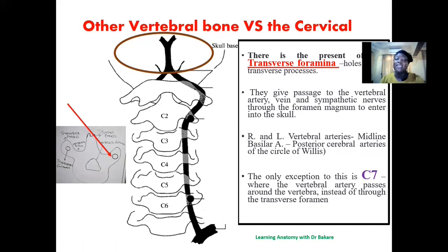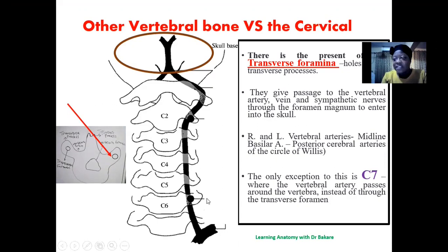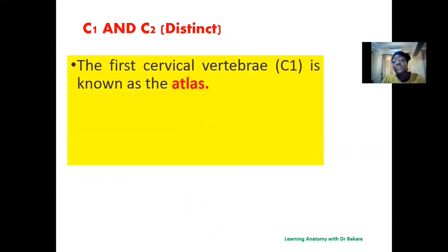This is why the transverse foramen is created only in the cervical vertebra. In the lower vertebrae — the thoracic and lumbar — the vertebral artery is not present, so there is no need for such a foramen. Notably, even though the seventh cervical vertebra has a transverse foramen, the vertebral artery passes around the transverse process of the seventh cervical vertebra to enter into the transverse foramen of the sixth cervical vertebra.